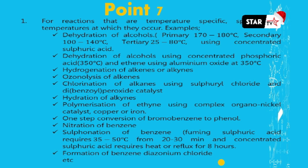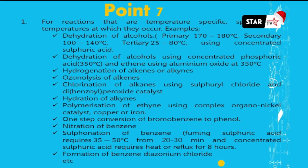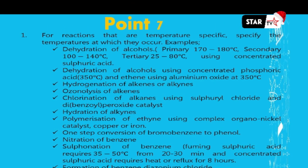For reactions that are temperature-specific, you should specify the temperatures. We are first of all looking at dehydration of alcohols. If you are dehydrating primary alcohols, for example ethanol, we usually use concentrated sulfuric acid at a temperature of between 170 to 180 degrees Celsius. The same temperature is usually used for all primary alcohols.